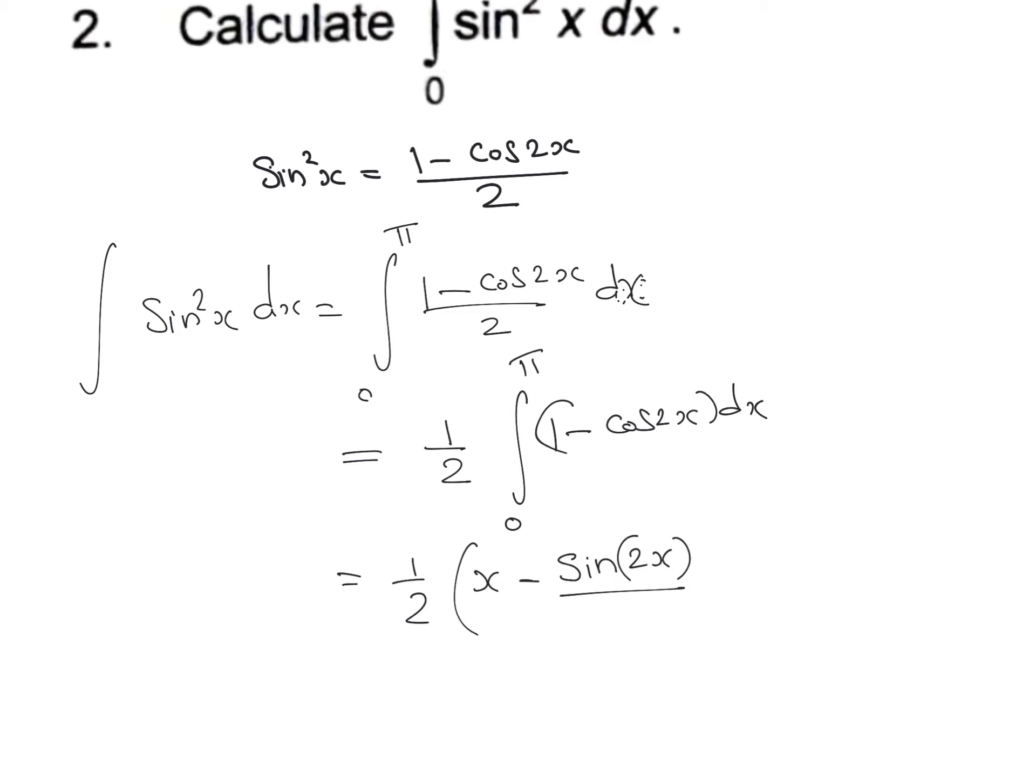Since 2x is an internal function, we need to differentiate this function and divide. The differentiation of 2x is 2 with respect to x, so the integration of cos 2x is sin 2x divided by 2. Now we can put the limit from 0 to π.